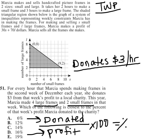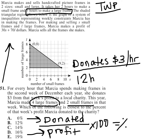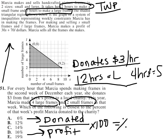We know she donates $3 per hour, but we don't know how many hours she worked. She made four large frames, and looking back at the information, it takes three hours to make a large frame. So four large frames took 12 hours. She also made two small frames, and it takes two hours to make each small frame, so that's four hours for small frames. All together, she worked a total of 16 hours. Multiplying 3 times 16, she donated a total of $48.